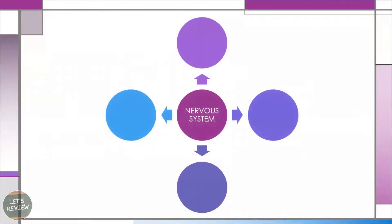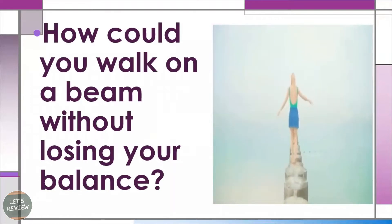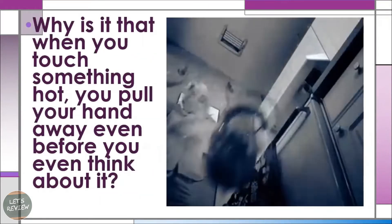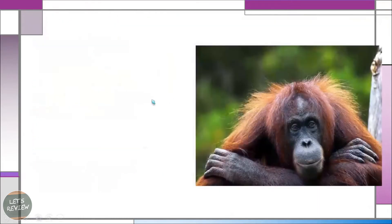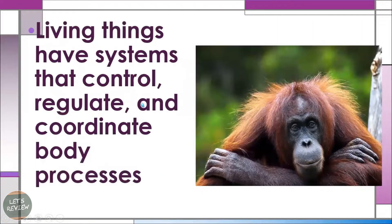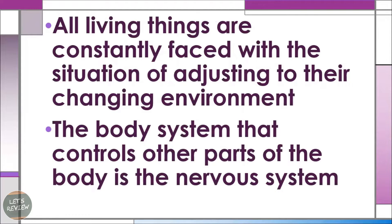In the nervous system, remember that there are some parts that work together in order to make the system work. Have you ever asked how you could walk in a room without losing your balance? Or why is it that when you touch something hot, you pull your hand away even before you think about it? Living things have systems that control, regulate, and coordinate body processes, constantly adjusting to their changing environment. The body system that controls other parts of the body is our nervous system.